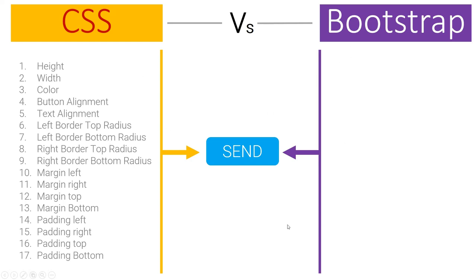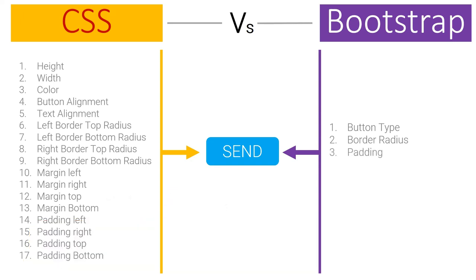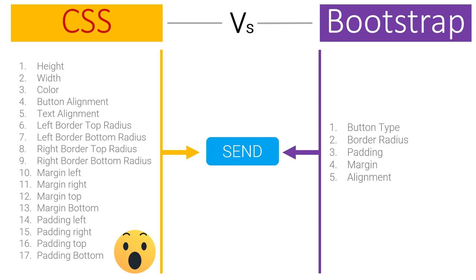Now come to the side of Bootstrap. Bootstrap will just specify the button type, then you specify the radius of the borders, then you specify the padding of the text inside, and you specify the margin of the button, and the alignment — and then you come up with this button. So CSS has a lot of attributes to come up with something small, and Bootstrap is just some simple attributes to come up with the same result.